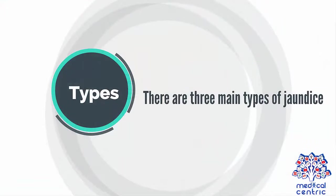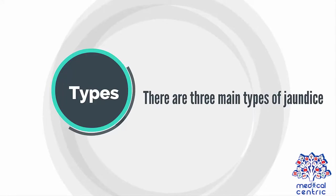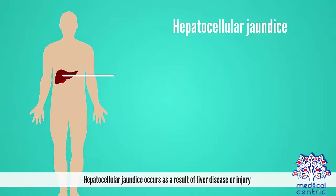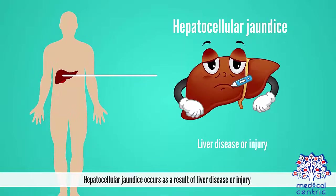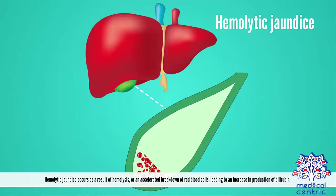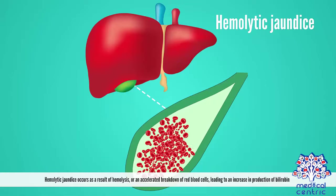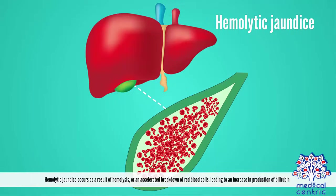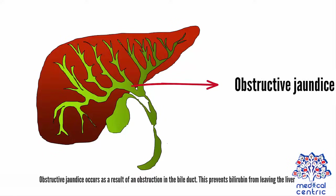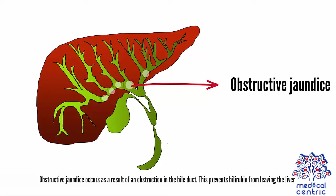There are three main types of jaundice. Hepatocellular jaundice occurs as a result of liver disease or injury. Hemolytic jaundice occurs as a result of hemolysis, or an accelerated breakdown of red blood cells, leading to an increase in production of bilirubin. Obstructive jaundice occurs as a result of an obstruction in the bile duct, which prevents bilirubin from leaving the liver.